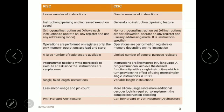In RISC we have a large number of registers available for programming; in CISC we have a limited number of general-purpose registers. The programmer needs to write more code to execute a task in RISC since the instructions are simpler, whereas in CISC the program will be shorter but the instructions will be more complicated. In RISC we have single fixed-length instructions, whereas in CISC we have variable-length instructions.